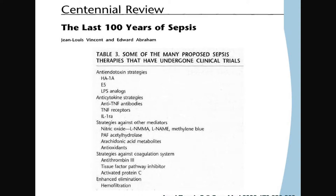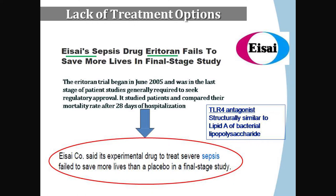Many trials fail because in sepsis there are a hundred and one mediators and you can only target one at a time — it is impossible to target all of them. Also, any intervention that improves outcome by less than 25% is probably just a placebo effect, because naturally for every disease there is about a 25% so-called biological cure rate.